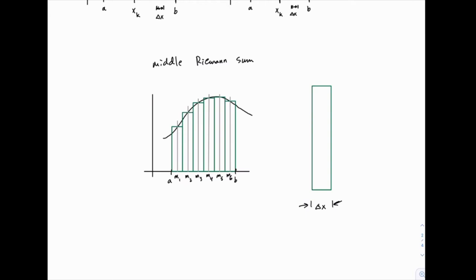And then the height here is going to be the function evaluated at the midpoint of each subinterval. So I'll use m sub k in general. On the picture here I have labeled m1, 2, 3, 4, 5, and 6 for the six rectangles that are drawn, and in general we can write m sub k.